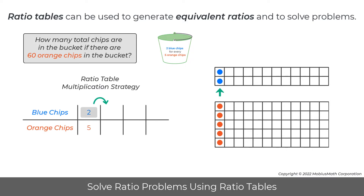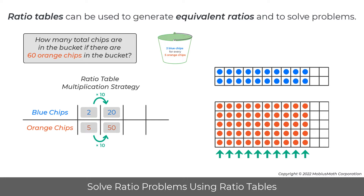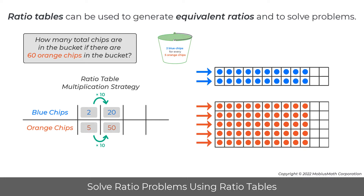two blue chips can be multiplied by 10 to get 20 blue chips. So, five orange chips are also multiplied by 10 to get 50 orange chips. Notice the chips in the rectangular arrays show that there is still a ratio of two blue chips for every five orange chips.